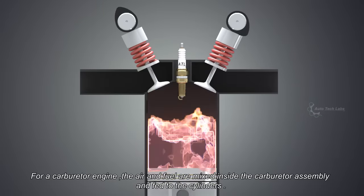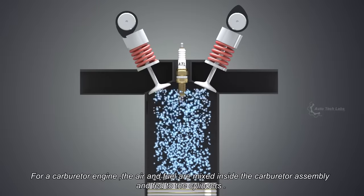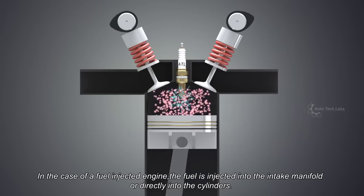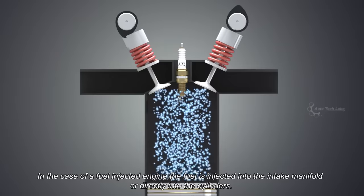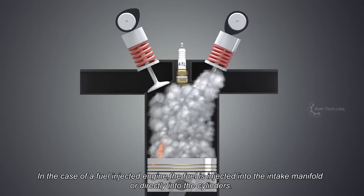For a carburetor engine, the air and fuel are mixed inside the carburetor assembly and fed to the cylinders. In the case of a fuel injected engine, the fuel is injected into the intake manifold or directly into the cylinders.